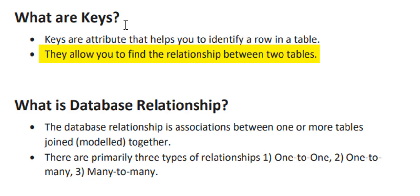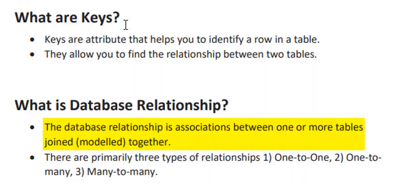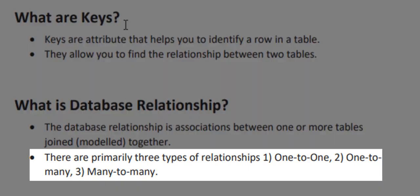Now, what is a relationship? A database relationship is basically an association between one or more tables that are modelled or joined together. We are trying to connect several tables together — that is establishing a relationship. In modelling, there are three types of relationships: one-to-one, one-to-many, and many-to-many.